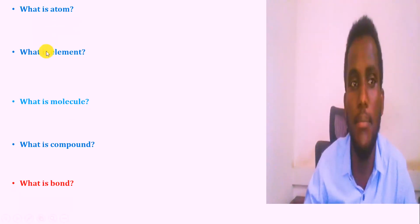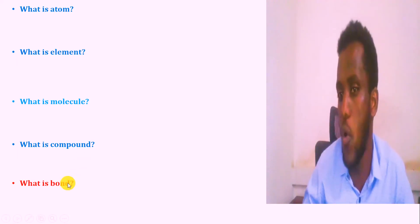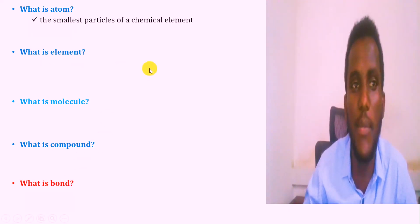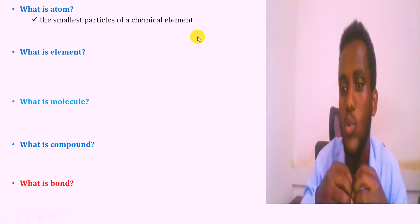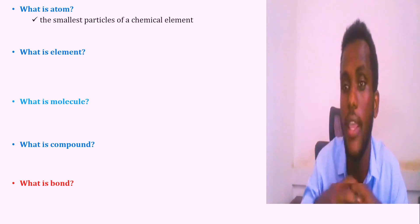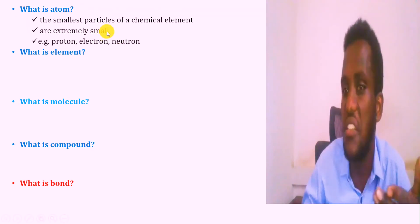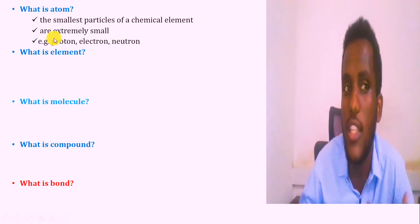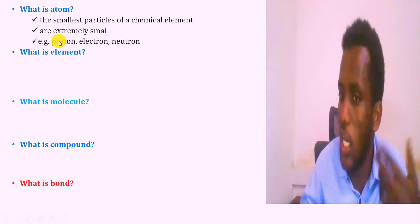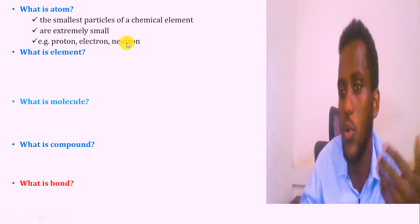So what is an atom, an element, a molecule, and a compound? Atoms are the smallest particles of a chemical element that exist. An atom is extremely small and is made up of protons, electrons, and neutrons. Protons are positively charged, electrons are negatively charged, and neutrons are neutral.